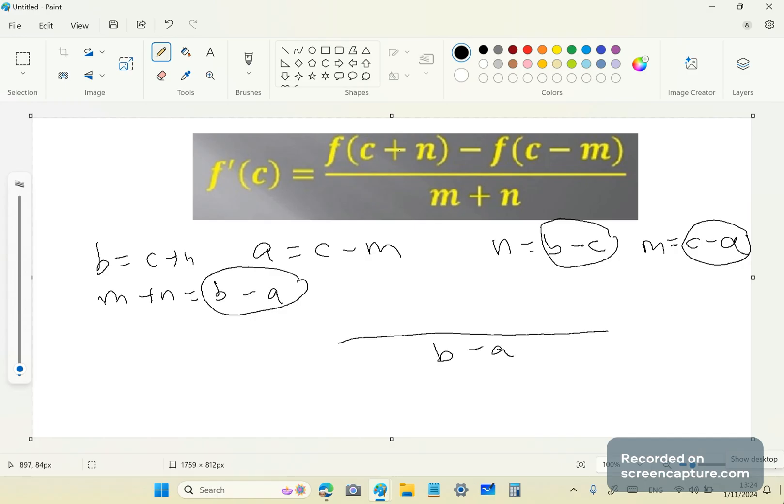If I say B equals C plus N and I say A is equal to C minus M, then M plus N is going to equal B minus A. Why? Because N is equal to B minus C and M is equal to C minus A. So if you add B minus C and C minus A, you're going to get B minus A. So at the bottom, you'll have B minus A.